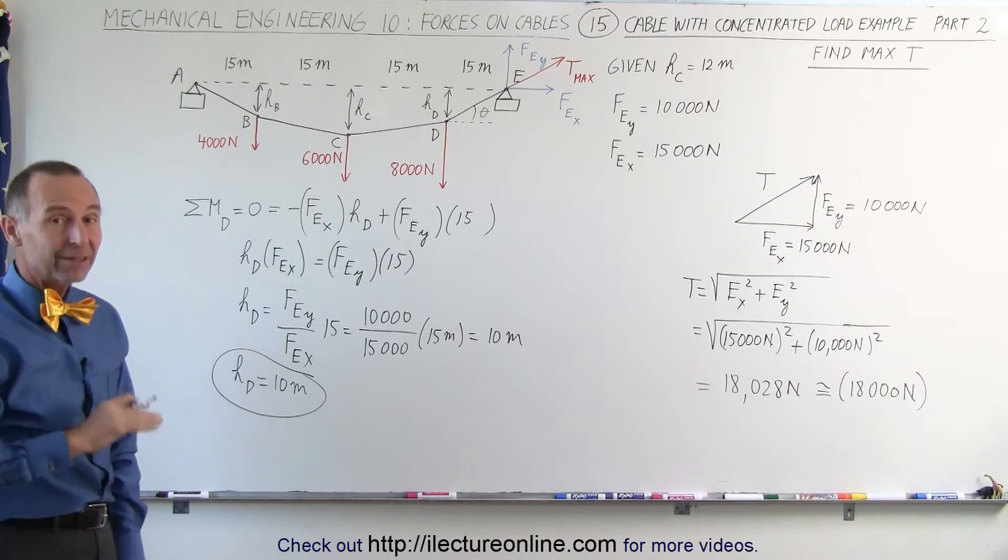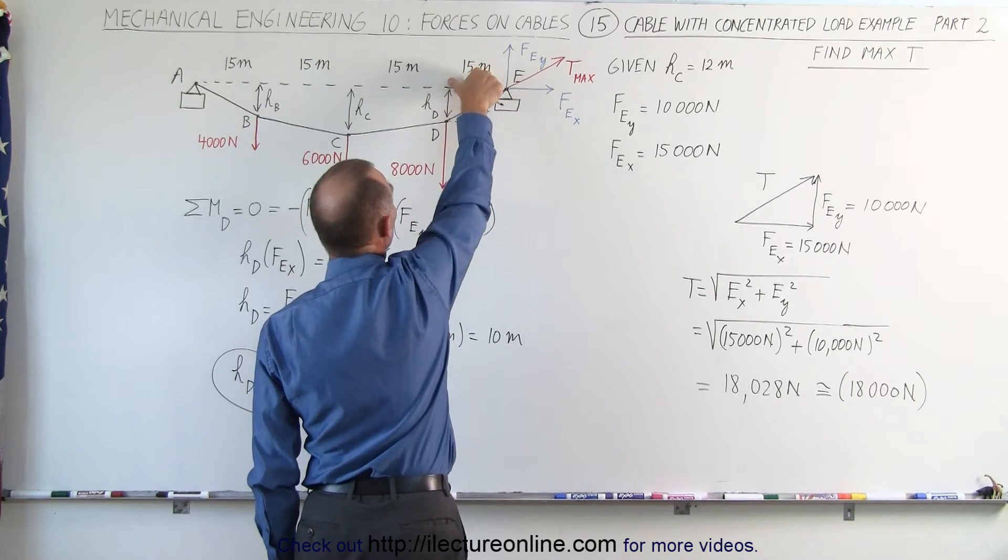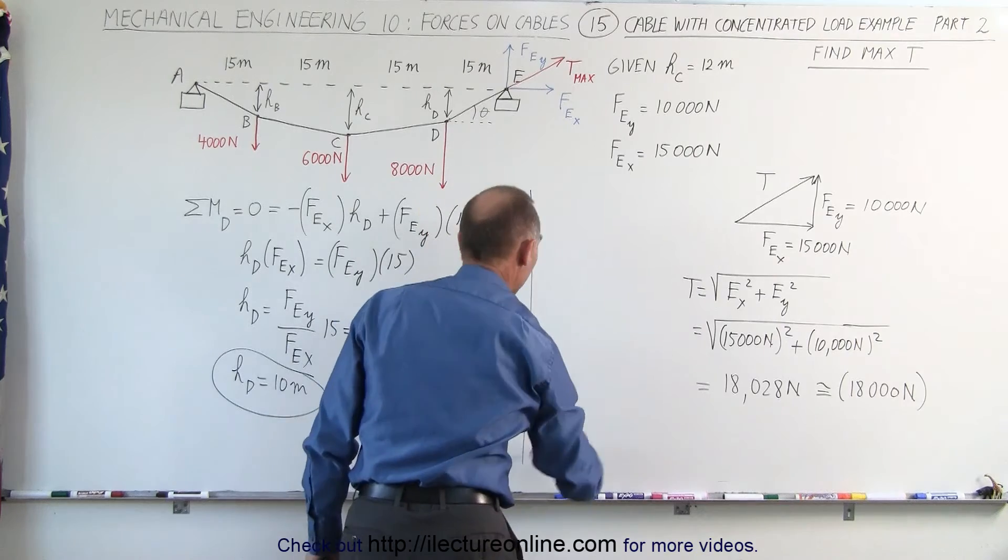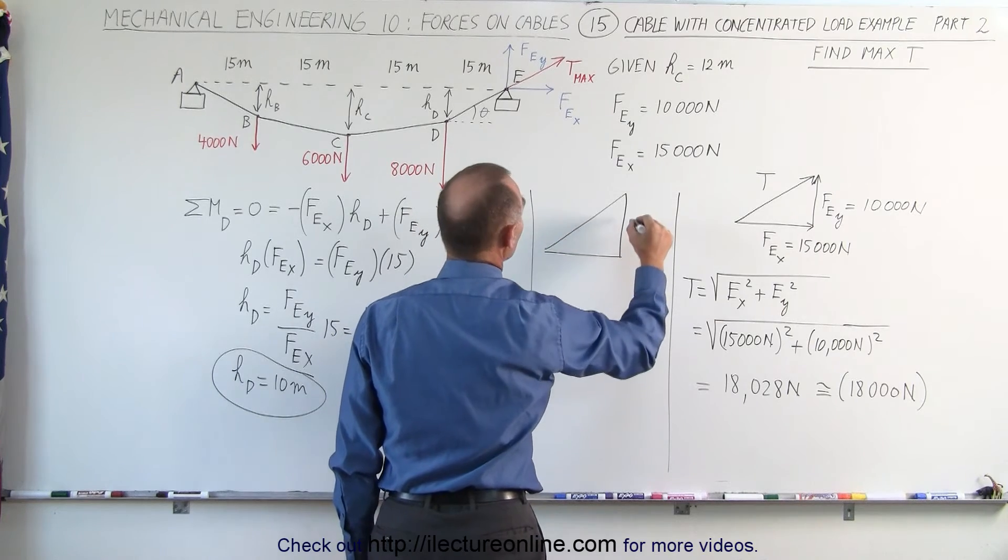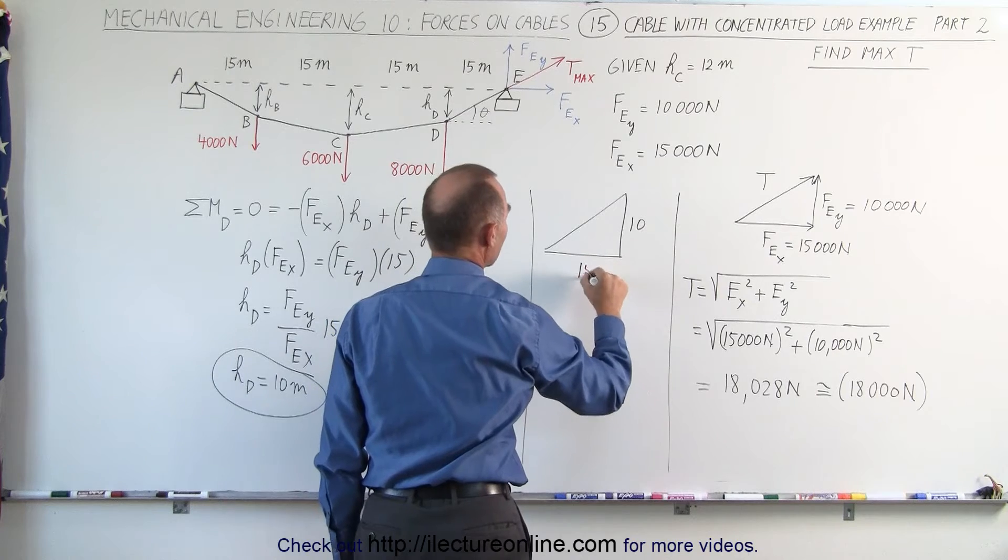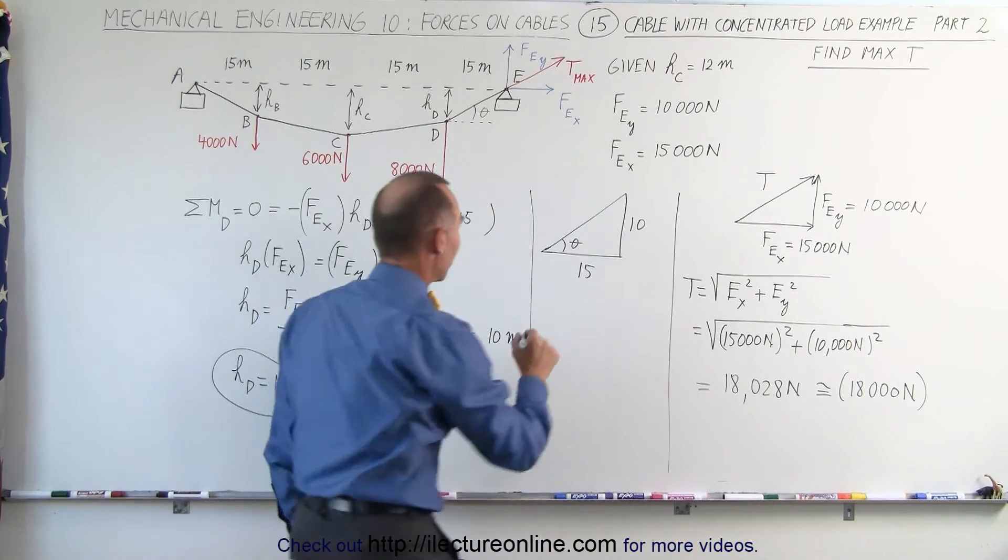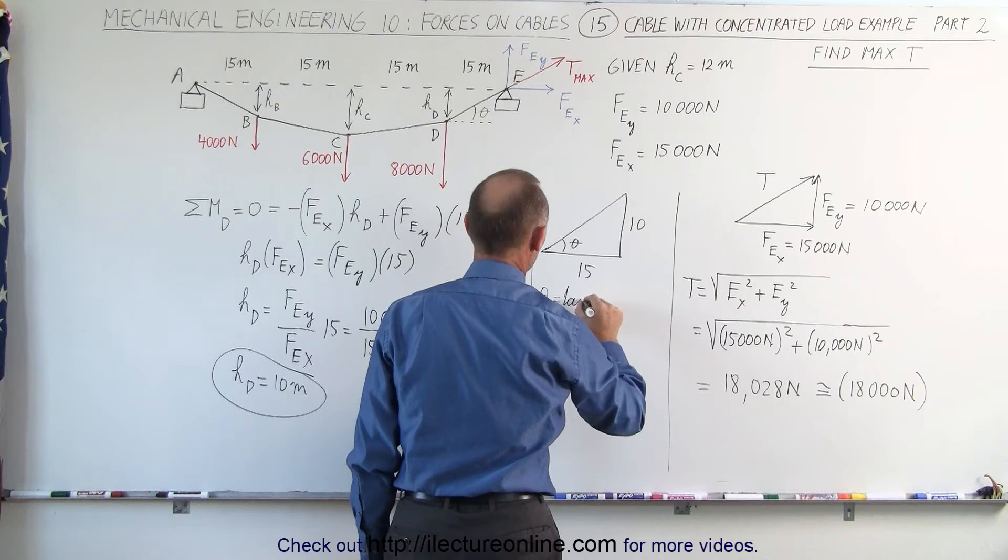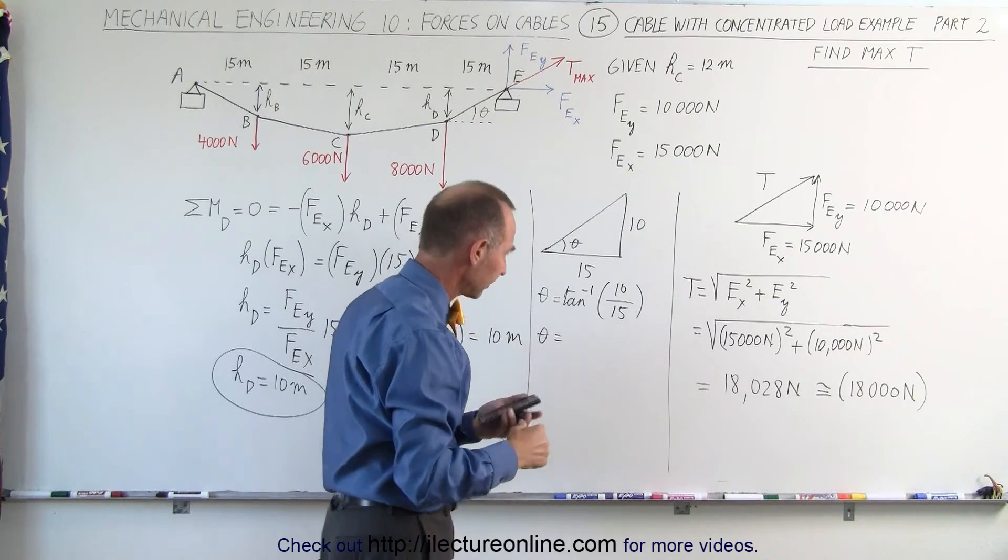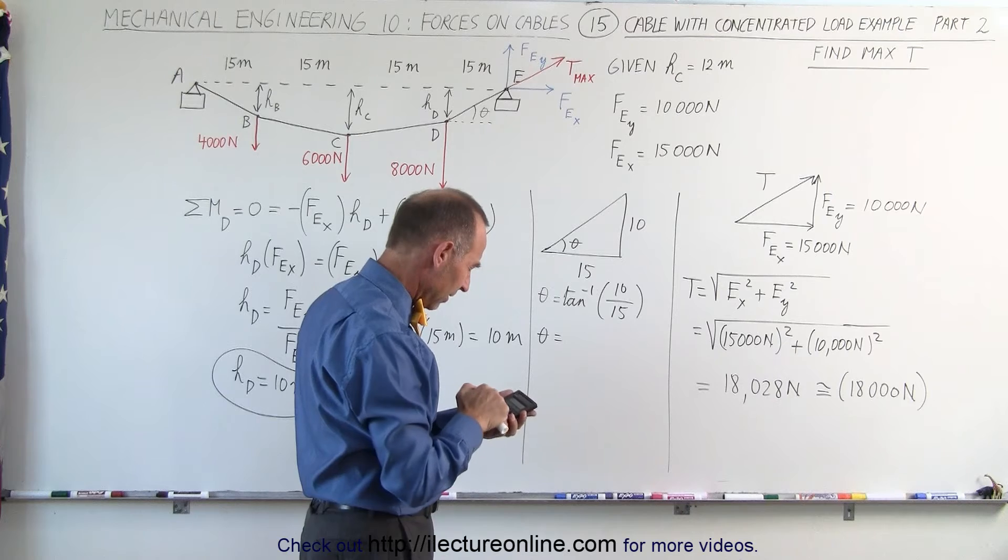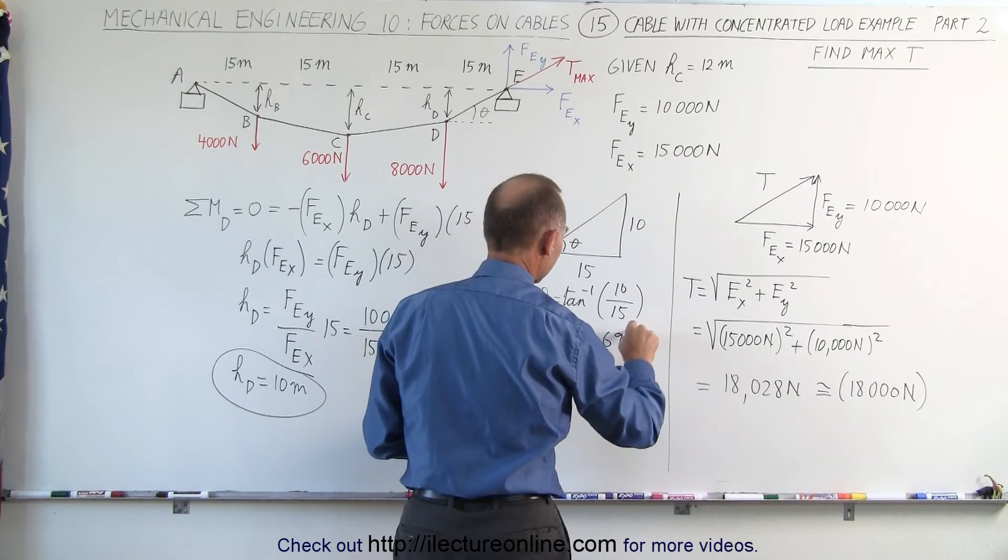Now that we have that value, we can set up a different kind of triangle. We can set up a triangle of the actual physical dimensions here. We know that this is 15 meters, we now know that this is 10 meters, so we can now draw a physical triangle representing this right here. So, we know this is now 10 meters, this is the H sub D. Here, this is the 15 meters, which was given up here, and now we're trying to find the angle theta and use the arctangent for that. We can say that theta equals the arctangent of the opposite side, 10, divided by the adjacent side, 15. Theta, therefore, is equal to, so two-thirds, take the inverse tangent, and we get 33.69 degrees.